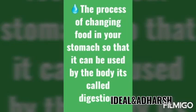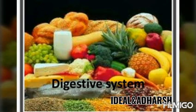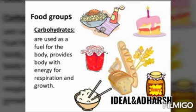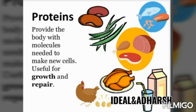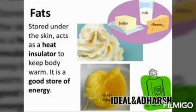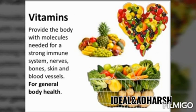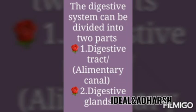The food we eat consists of complex compound nutrients like carbohydrates, proteins, and fats. These have to be converted into simpler molecules like glucose, amino acids, and fatty acids respectively. The digestive system can be divided into two parts: the digestive tract and the digestive glands. We are going to look at the digestive tract, also called the alimentary canal.